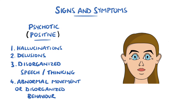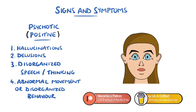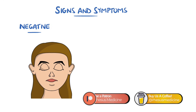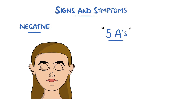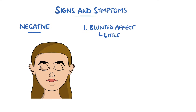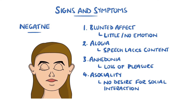A classic example of disorganized behavior is being dressed inappropriately for an event or for the climate. Negative symptoms are deficits in normal emotions or thoughts, and are split into the five A's: blunted affect, meaning showing little emotion or expression; alogia, which is a lack of content in speech; anhedonia, which is the inability to feel pleasure; asociality, which is a lack of desire to interact or form social relationships; and avolition, which is a lack of motivation.